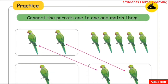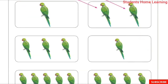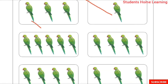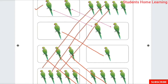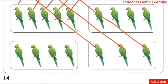Practice: connect the parrots 1 to 1 and match them. In the 1st box, match them as shown. In the 2nd box there is 1 parrot. In another box there are 3 parrots — match 3 parrots. In this box there are 5 parrots — match 5 parrots. In another box there are 4 parrots — match 4 parrots.